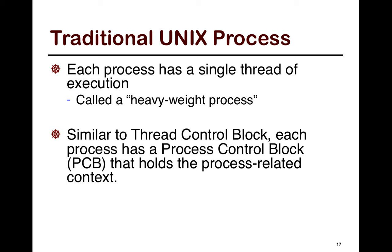Similar to a thread control block, each process also has a process control block. In Linux, both of these hold the same amount of state. Some other state could include things like what status the process is in — maybe it has I/O outstanding, maybe it's waiting on some long events, and how much time it's been allocated.